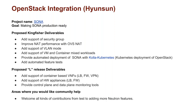The focus of OpenStack integration is making SONA production ready. In Kingfisher, they're looking to add support for security groups, improve NAT performance with OVS NAT, support VLAN modes, support VM and container mixed workflows, provide automated deployment of SONA, and add automated feature testing. The L release will see the addition of container-based VNF and hardware appliances such as load balancer and firewall, as well as control plane and data plane monitoring tools.